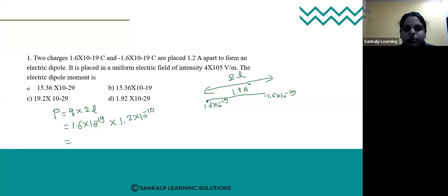If you see the options, everywhere we have 10^-29, 10^-29, 10^-19. So 10^-19 times 10^-10 will be 10^-29. Here 1.6×1.2, this product will be 1.92. So it will be 1.92, that is option d is the correct answer.